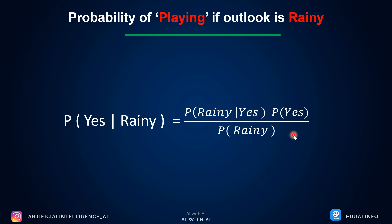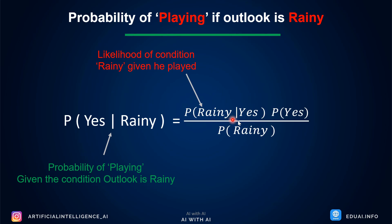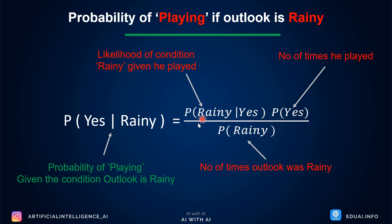Let's take one example: what is the probability of playing if outlook is rainy? In the equation: probability of playing given outlook is rainy equals the likelihood of condition rainy given he played — meaning how many times he played when outlook was rainy — multiplied by P(S), the total number of times he actually played, divided by how many times the outlook was rainy. I hope it feels a bit easier now, and it will get easier as we go.